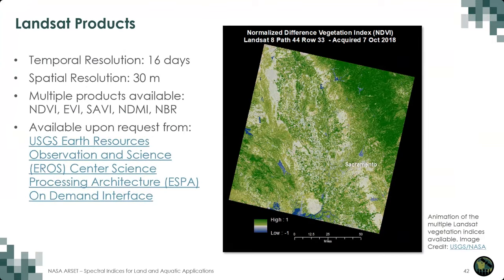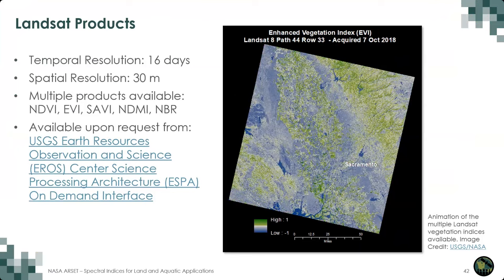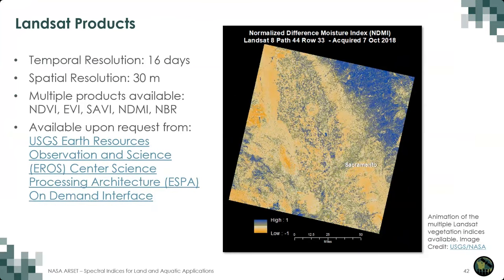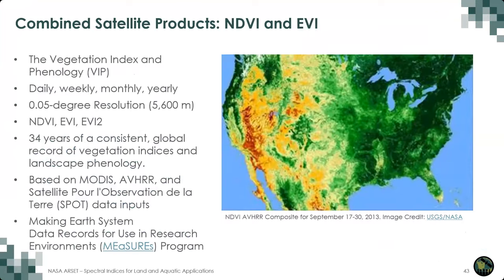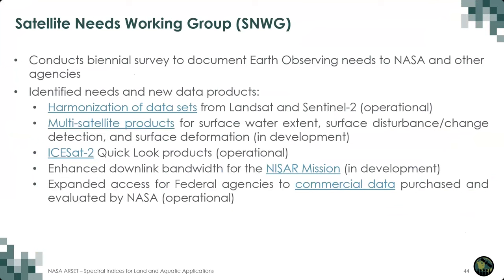There are also Landsat NDVI products available upon request from the USGS Earth Resources Observation and Science Center, with new products coming via the Satellite Needs Working Group. There is also a unique Vegetation Index and Phenology product — global datasets created using AVHRR and MODIS data — developed to provide consistent measurements of NDVI and EVI over 30 years, produced in collaboration with the University of Arizona. In session three, Brittany will review exciting new products available from the Satellite Needs Working Group.